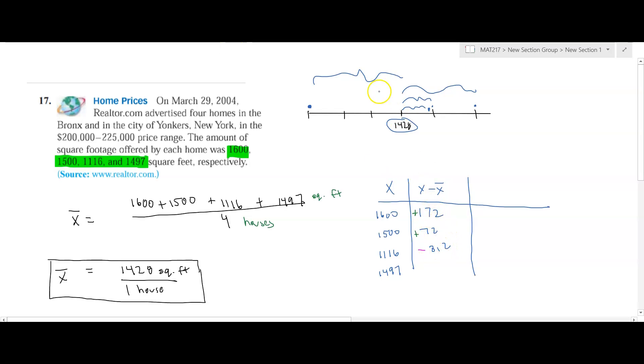Now, one thing we should note is the reason you have more points over here and only one point over here is this is an extreme point. This is really far, the farthest point, the point that's the farthest away from the mean. And then we could also do 1,497 minus 1,428, which gives us a positive 69.